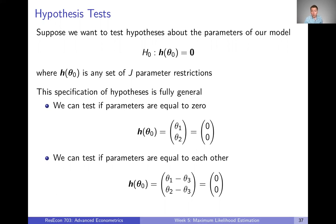This might look like we're forcing our hypotheses into a very particular format, but this specification is fully general. We could test if parameters are equal to zero — the most standard hypothesis test — so we could jointly test that theta one and theta two both equal zero by setting up our hypotheses that way. We could also test if parameters are equal to each other: for example, if theta one equals theta three and theta two equals theta three, with a little manipulation we get theta one minus theta three equals zero and theta two minus theta three equals zero. All kinds of functions of the parameters work, so long as they equal zero.